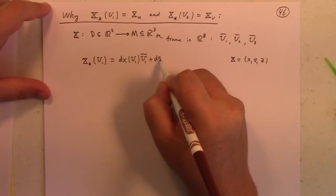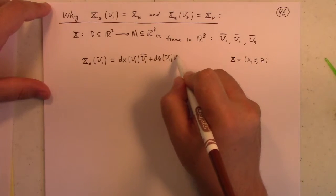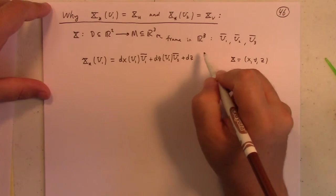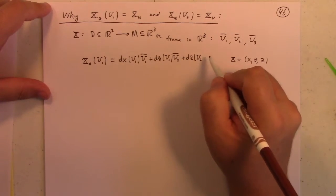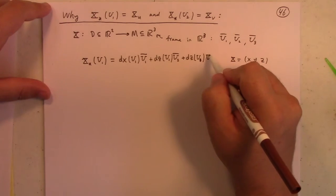but I'll put a bar because that's the U1 in R3, plus DY acting on U1. Put a U bar 2 because it's going to R3. Well, I guess technically it's going to some, oops, 1, U bar 3.